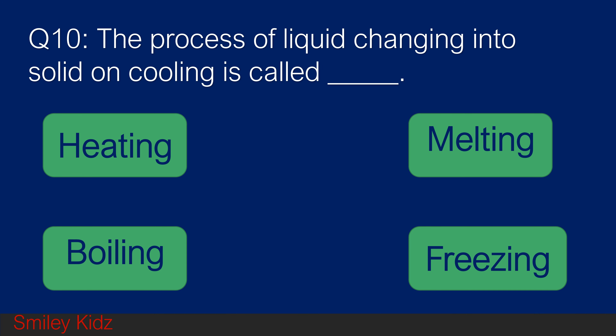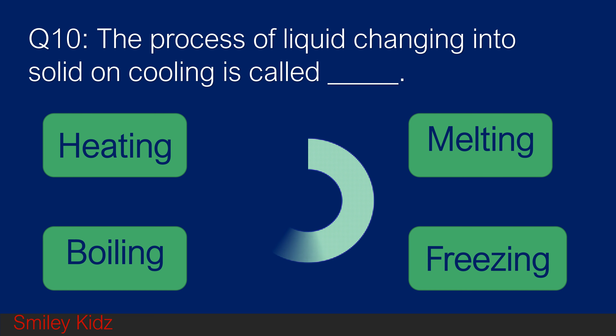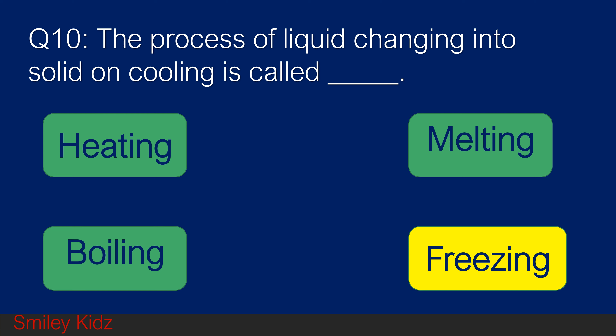Question number 10. The process of liquid changing into solid on cooling is called blank. Option A heating, option B melting, option C boiling, and option D freezing. Your time starts now. And your time is up. The right answer is freezing. The process of liquid changing into solid on cooling is called freezing.